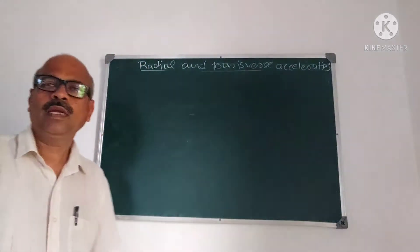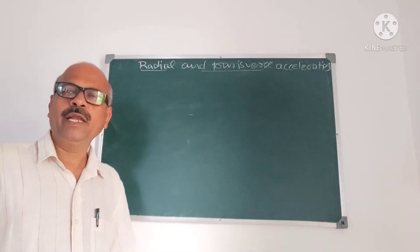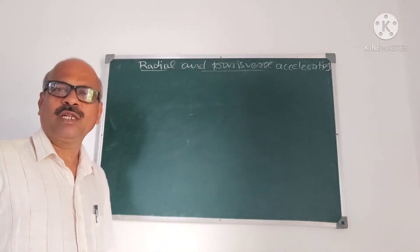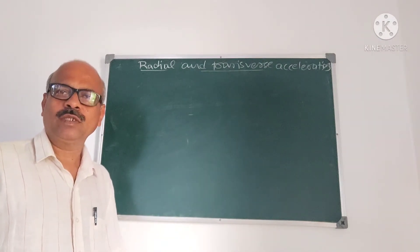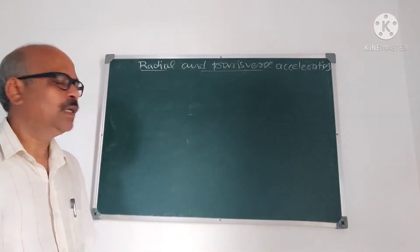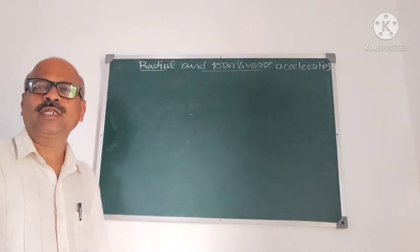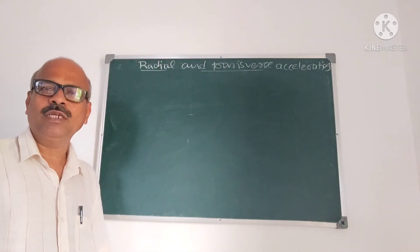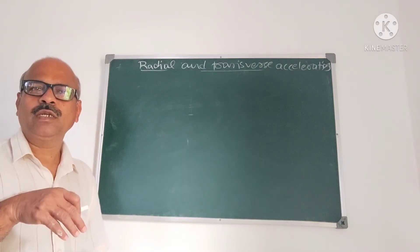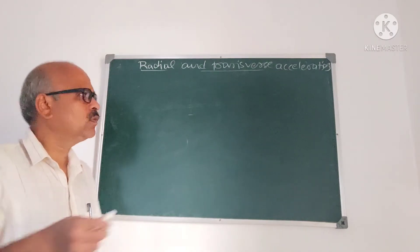Dear students, in my last video I explained the derivation of radial and transverse velocities. Radial velocity means the component of velocity along the radius vector, and the component of velocity perpendicular to the radius vector at the point P is called transverse velocity.